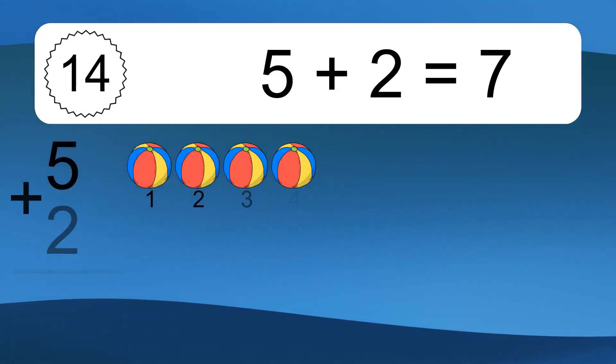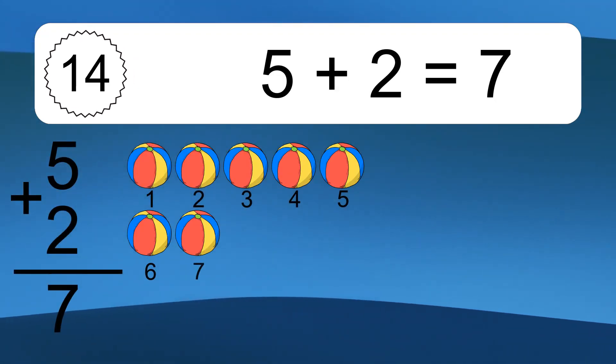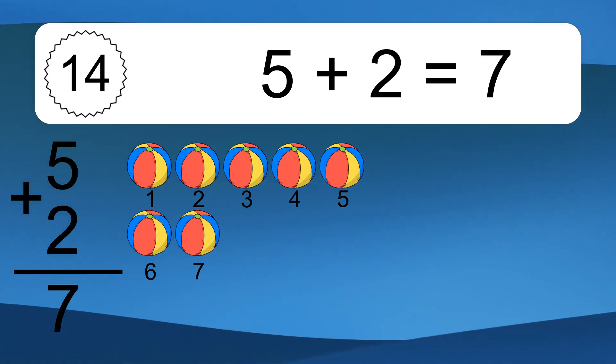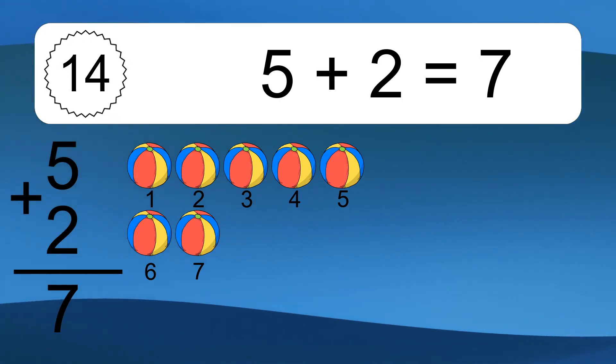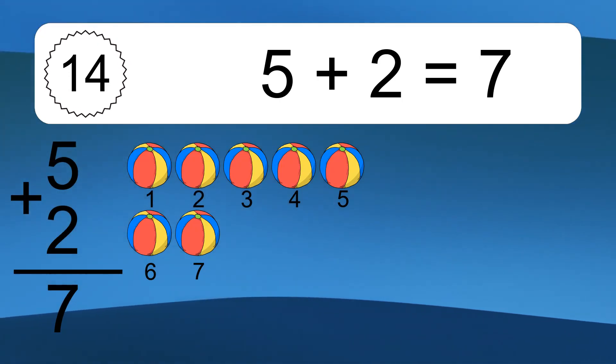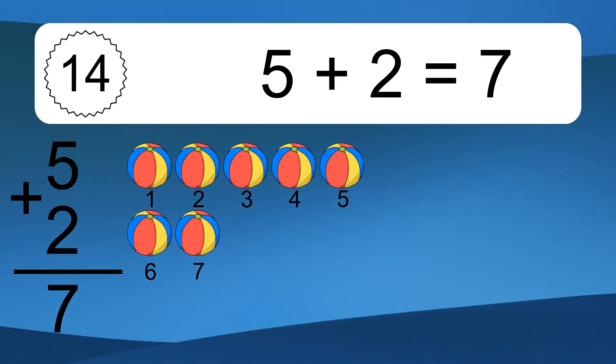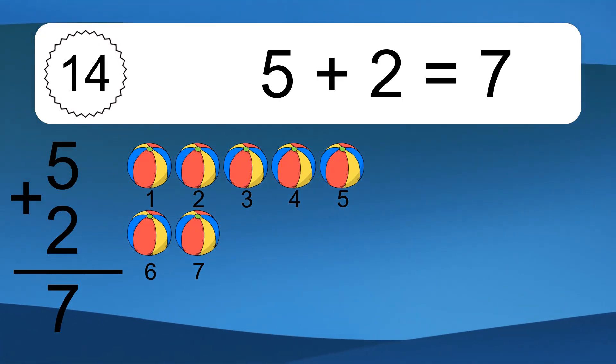5 plus 2 equals 7. Let's count it. 1, 2, 3, 4, 5, 6, 7.